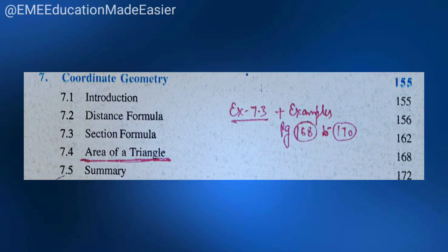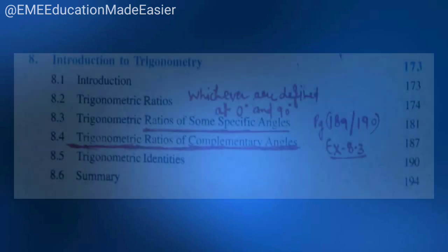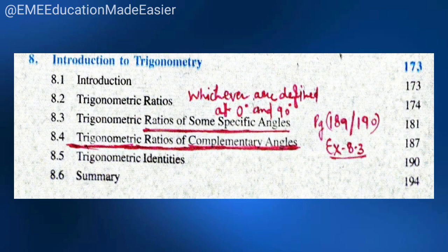Again, a very important chapter — chapter number 8, Introduction to Trigonometry. Trigonometry ratios of some specific angles, whichever are defined at 0 and 90 degrees, they are not coming. Trigonometry ratios of complementary angles are also not coming. You can see exercise 8.3 on page 180 to 190, it is not coming.